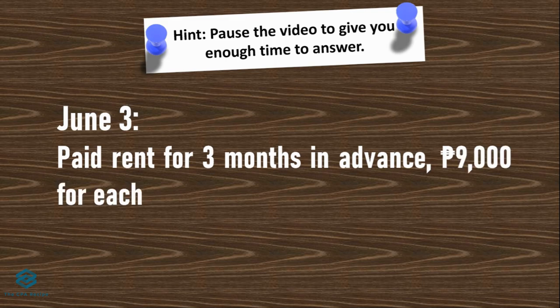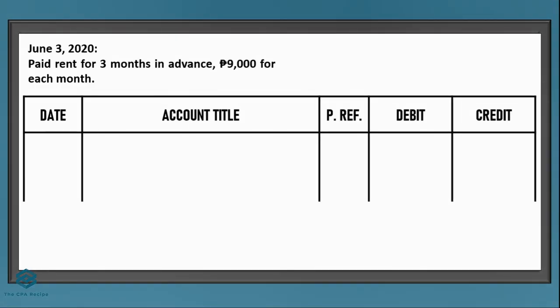On June 3, part of starting a business is needing space for the principal place of business. A common requirement from landlords is advance rentals — in this case, we paid for 3 months in advance. It's the beginning of the month and we're paying rent for 3 months, meaning the rent for the first month (June) is not yet due. Therefore, it is not yet rent expense as of the recording date, so the correct debit here is prepaid rent.